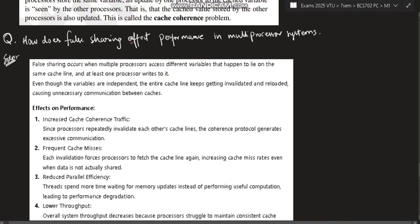Next is how does false sharing affect performance in multiprocessor system? False sharing occurs when multiple processors access different variables that happen to lie on the same cache line. There is one cache line and there are multiple variables, and multiple processors access each of these variables. In that case, some will be old, some will be new. Based on that, some will access new, some will access old. In that case, there will be different values coming. And at least one processor writes to it, and also another processor is changing the values while other processors are accessing. Then the cache line keeps getting invalidated and reloaded. It causes waste of time.